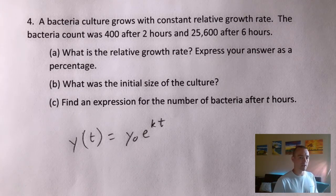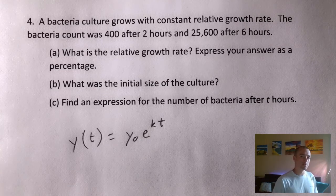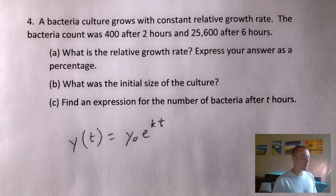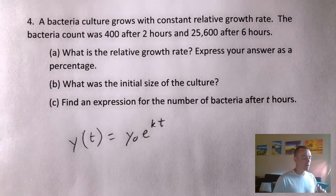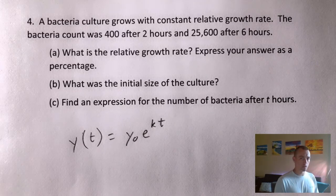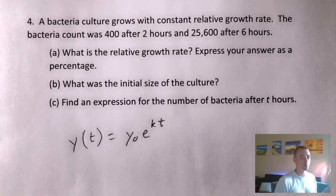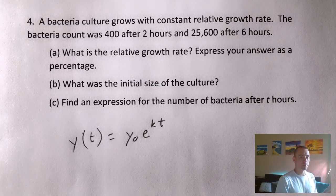I've done another problem kind of like this and I'm going to follow a similar process. If you want to see the other exponential growth and decay bacteria problem I did, you can click up there at the top of your screen. Basically, what I'm going to do here is start with part C, because I think it's actually easier to work with this expression and work with this formula from my Calculus 2 study guide in order to figure out the relative growth rate and the initial size of the culture as well. So we're going to use this formula to work our way backwards to solve parts A and B, and once we've figured those out, that gives us part C.